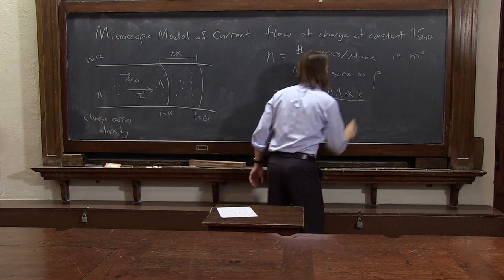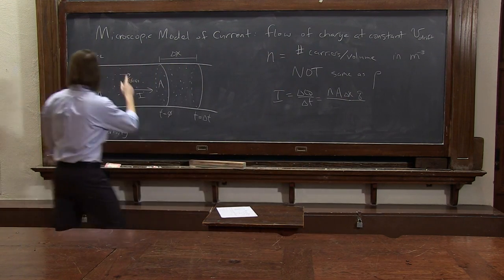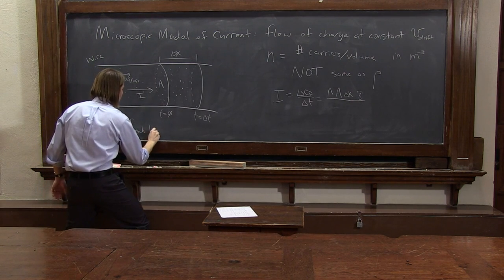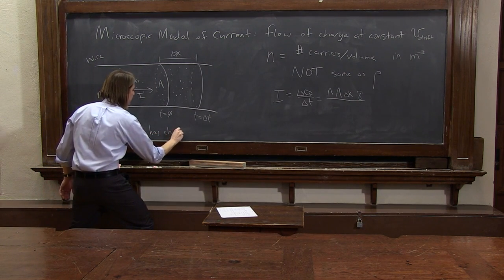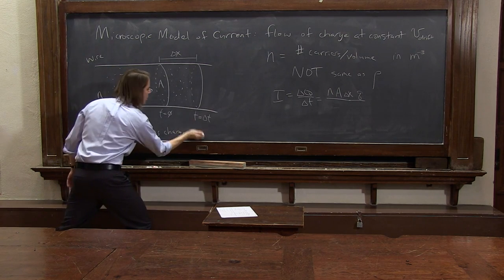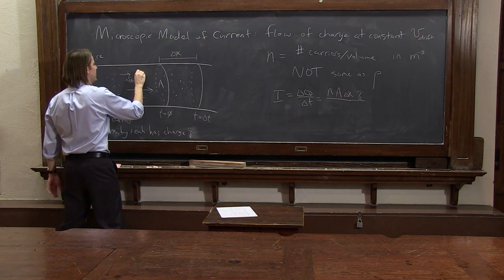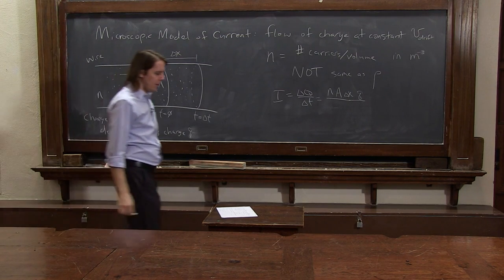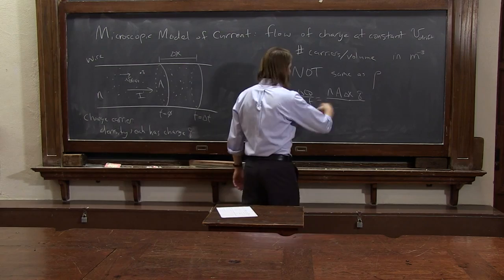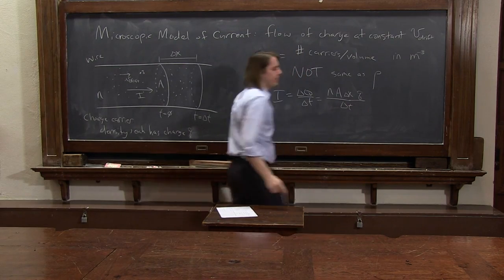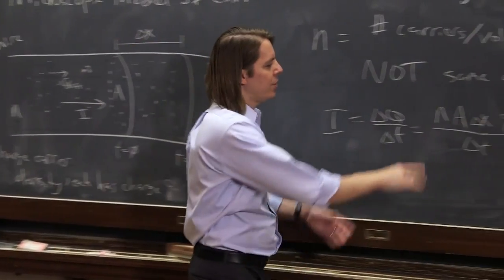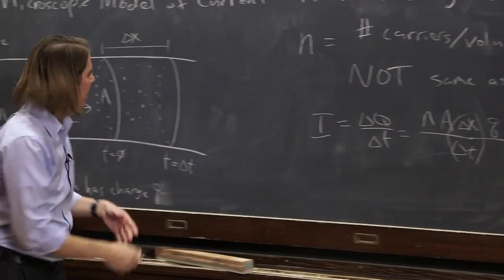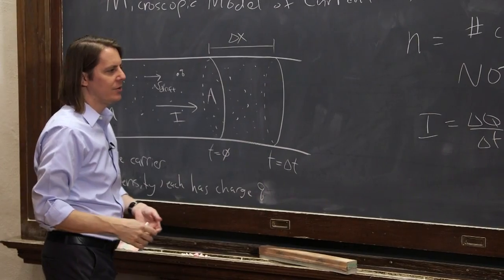To make it the charge, we need q. That's the charge of each charge carrier. The charge carrier density, each has charge q, little q. Each one of these is a little q. And in the bottom, delta t is just delta t. So if we look, we can see constant, constant, constant. And that is v drift, how far they go in a certain amount of time.